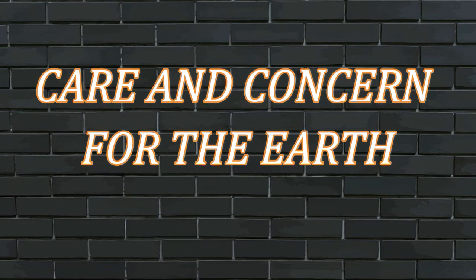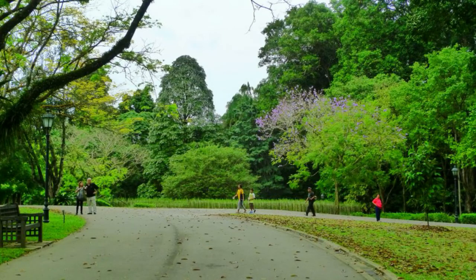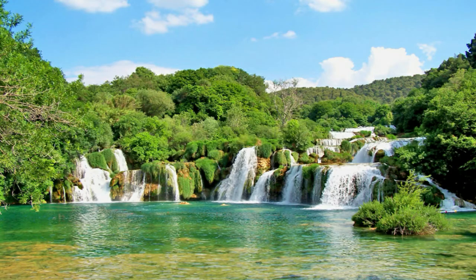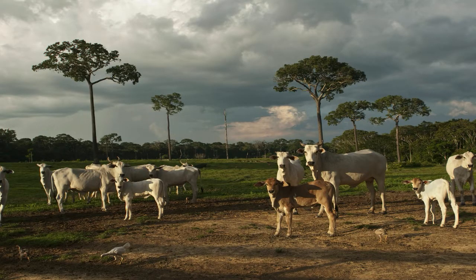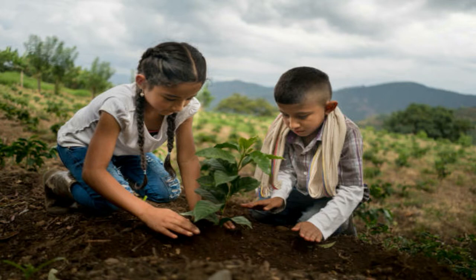Care and concern for the earth. We need to protect the earth. It is our home. It has air, water, and land where living things live. We must keep them clean. Here are some ways to care for the earth. Plant more trees. They help prevent the soil from being washed away. They also make the surrounding air fresh and clean.